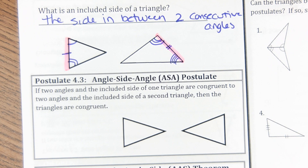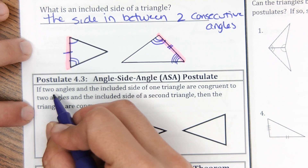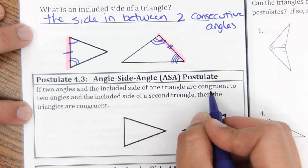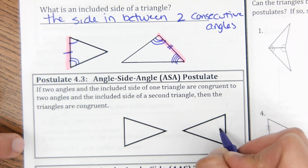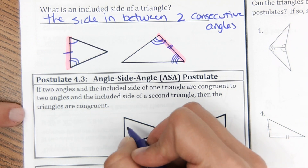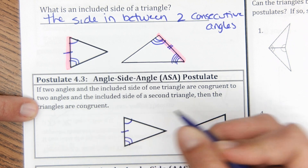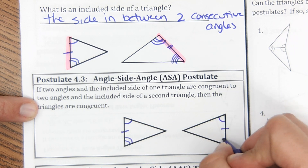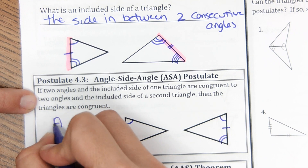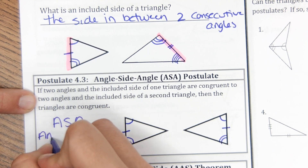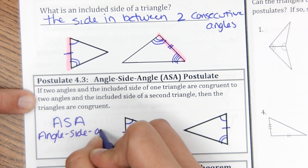The angle-side-angle postulate: if two angles and the included side of one triangle are congruent to two angles and the included side of the second triangle, then the triangles are congruent. So if you have angle-side-angle in common with angle-side-angle, then they are congruent by ASA.